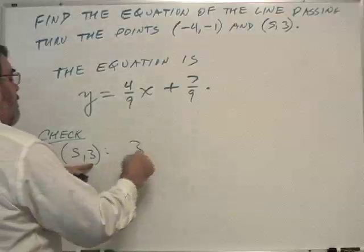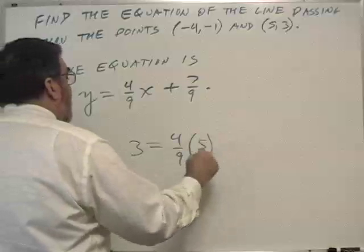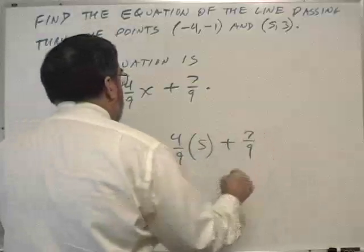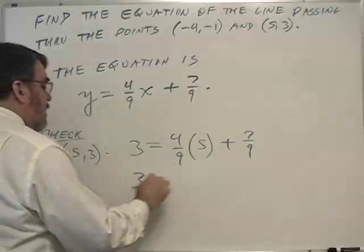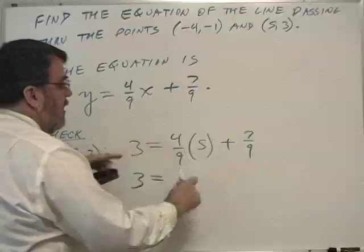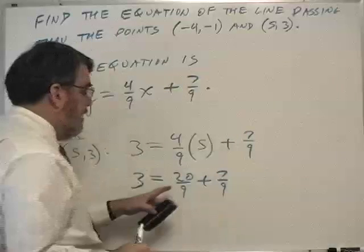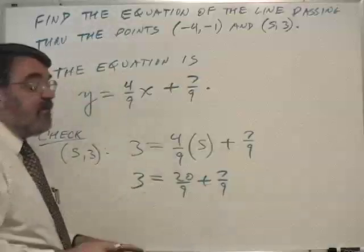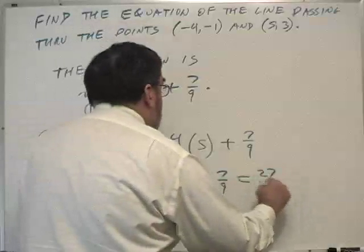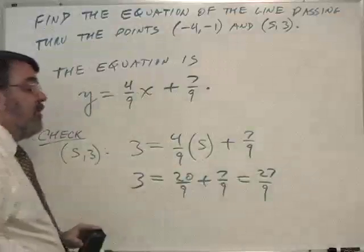All right, so y is 3. That equals 4 ninths times 5 plus 7 ninths. 3 equals, what is this? 5 times 4 ninths will be 20 ninths plus 7 ninths. And 20 plus 7 is 27 over 9. Divide this and we get 3.